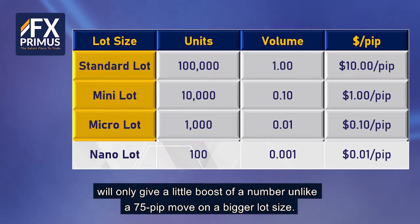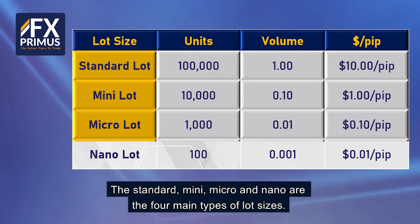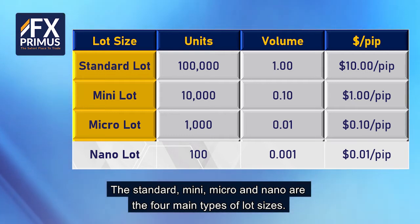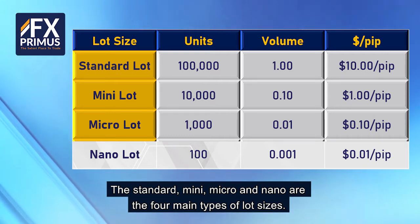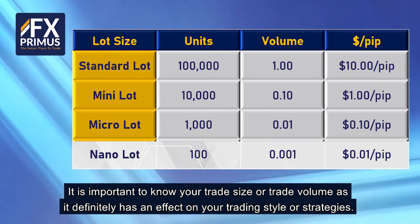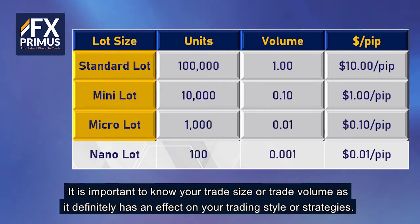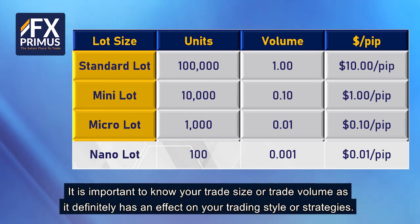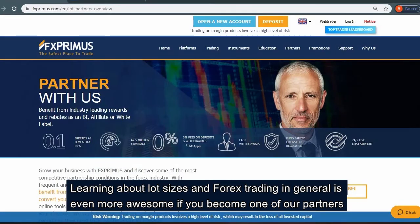The standard, mini, micro, and nano are the four main types of lot sizes. It is important to know your trade size or trade volume, as it definitely has an effect on your trading style or strategies.